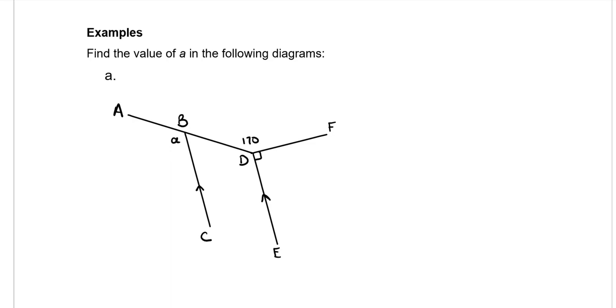All of the capital letters that we have on here, so the A, B, capital C, D, E, F, those are not things that we are trying to find. Those capital letters are ways of naming the different points that are along this diagram.